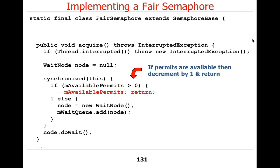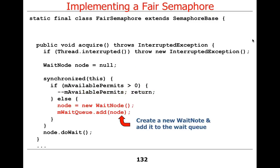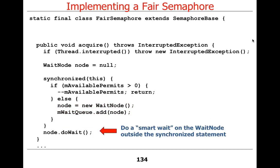So we come in, we acquire the intrinsic lock just to protect mAvailablePermits — that's safe. Otherwise, if permits are less than or equal to zero, we make a new wait node and add it to the queue. Notice the trick: wait node is a local variable starting as null, we set it, add it to the wait queue with the lock held, then release the intrinsic lock. Now we call doWait on the node — this does not need to be called with the lock held. Local variables don't have to be locked to be thread-safe because they can't be contended by other threads. So we do a doWait call, which is a smart wait on the wait node outside the scope of the synchronized statement.